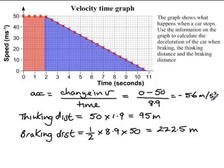I also know that the distance traveled is equal to the area under a velocity-time graph. And so I've used that to do the last two parts of the question: to calculate the thinking distance by working out that area, and the braking distance by working out the area of that triangle.